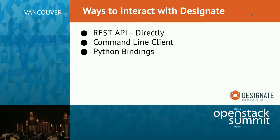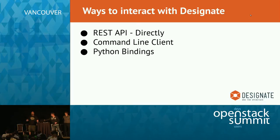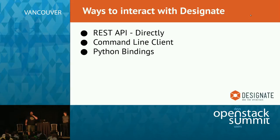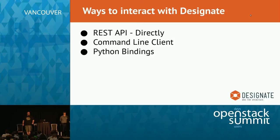We have three ways you can interact with Designate: a REST API you can query directly, a command line client that covers all the major features users need, and a new OpenStack client-compatible command line client being developed. We also have Python bindings, which give you full programmatic control over your zones, records, and record sets.